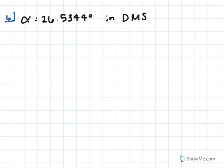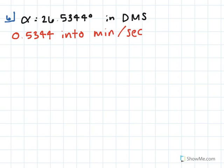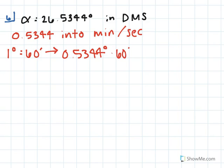Here we're doing sort of the opposite of the previous question. We're given the angle measure 26.5344 degrees and asked to write that in degrees, minutes, seconds. In order to do that, we need to convert the decimal 0.5344 into minutes and seconds. We know that 1 degree equals 60 minutes, so we multiply 0.5344 degrees times 60 minutes and get 32.064 minutes.